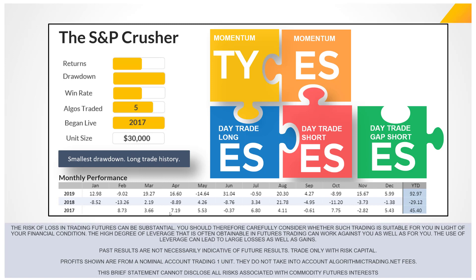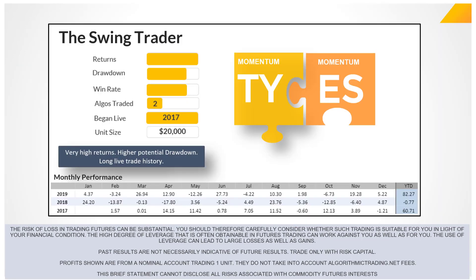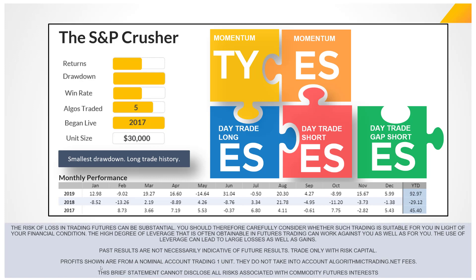Looking at the monthly performance — this is sum-up performance, not compounded. In 2019 we had a really good year. I should also mention 2018, because you'll notice the Crusher took a beating that year. Going back to the Swing Trader, you'll notice it was also down in 2018 but not quite as much. Notice that in January 2018 on the Swing Trader it had a great month at 24%. Let me explain why the loss was bigger on the Crusher in 2018.